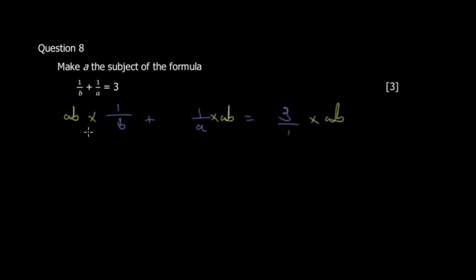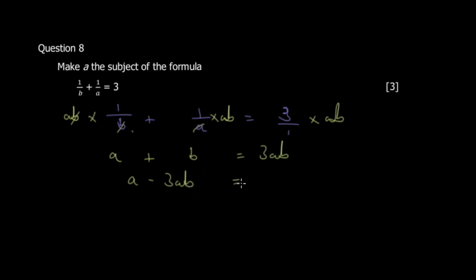Multiplying each term by ab: ab/b = a, ab/a = b, and 3 × ab = 3ab. So we get a + b = 3ab. Rearranging to isolate a, move 3ab to the other side: a − 3ab = −b. Then factor out a: a(1 − 3b) = −b.